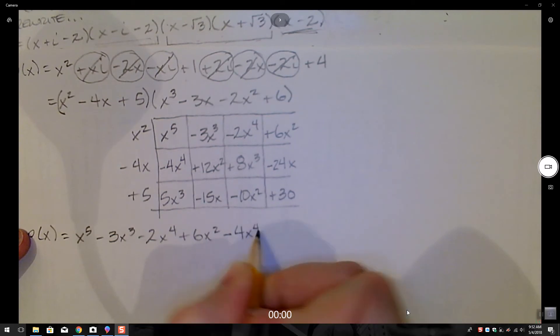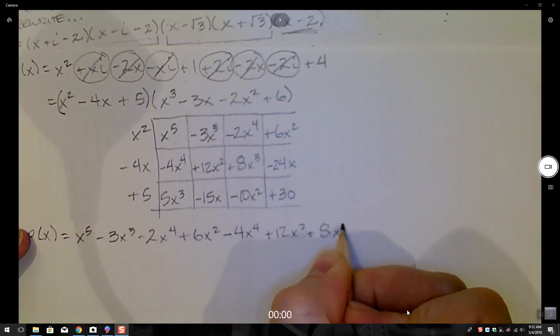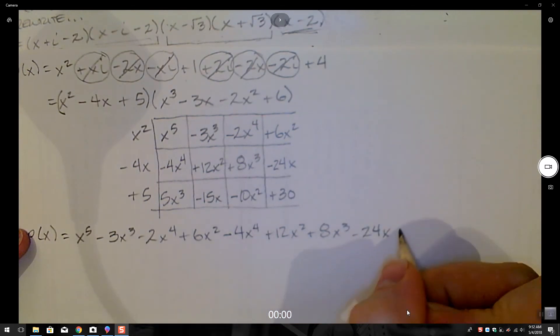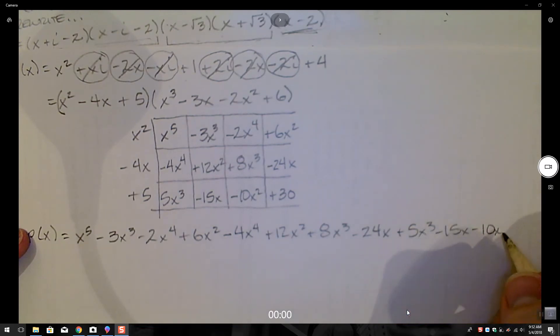Minus 4x to the fourth plus 12x squared plus 8x to the third minus 24x. Third row. Plus 5x to the third minus 15x minus 10x squared plus 30.